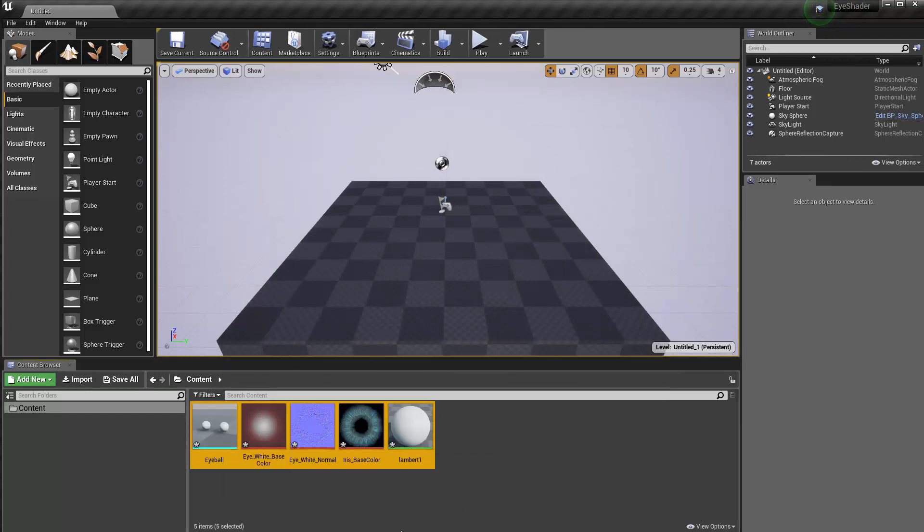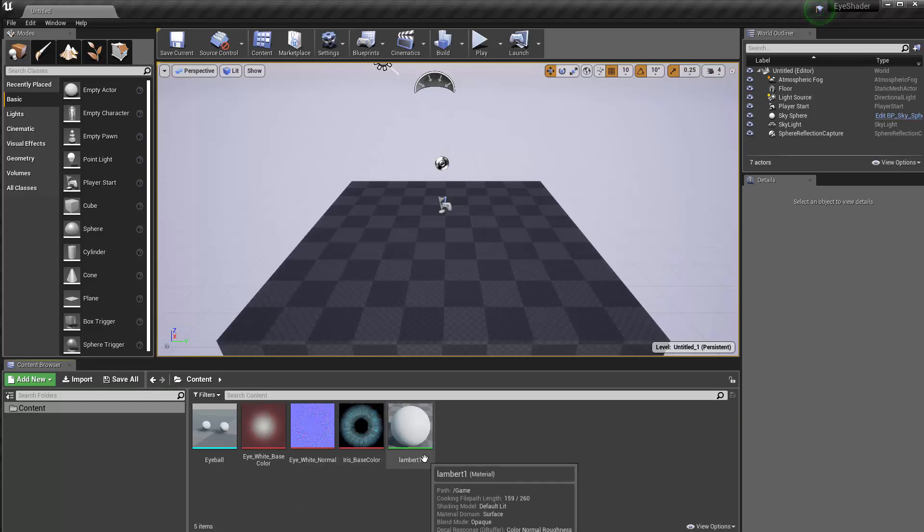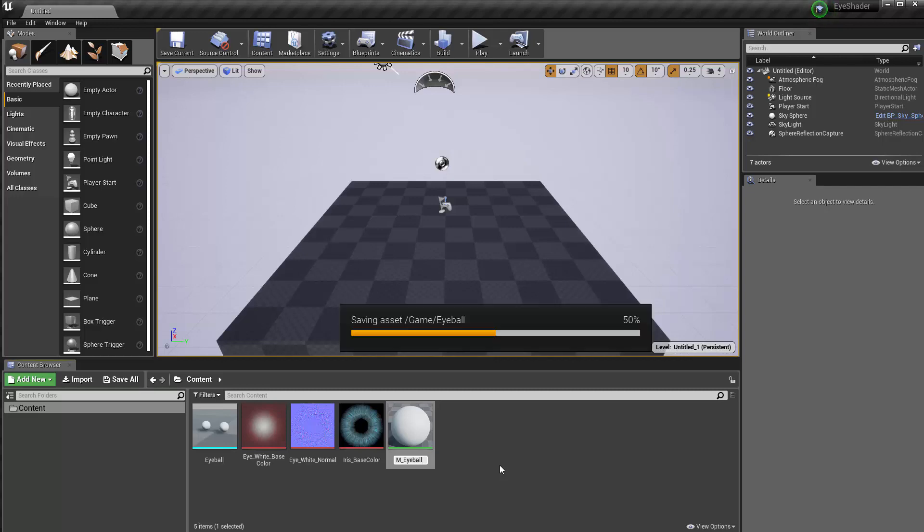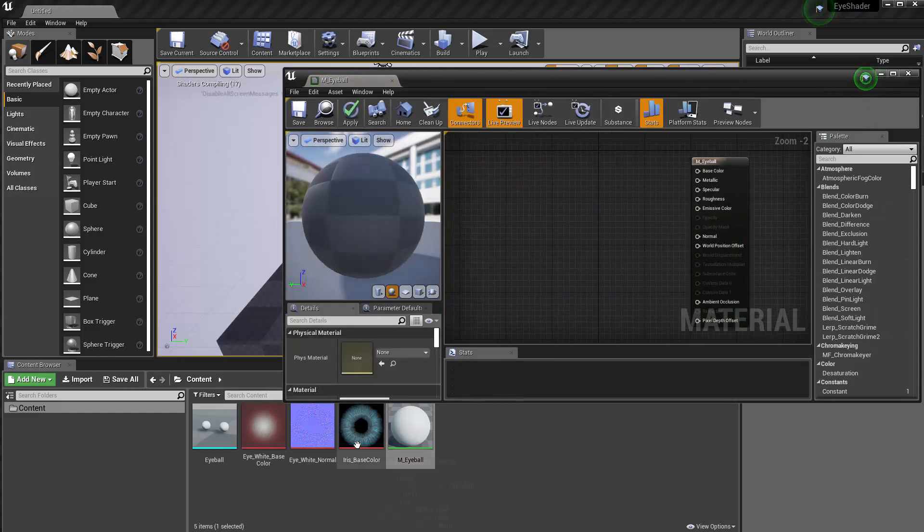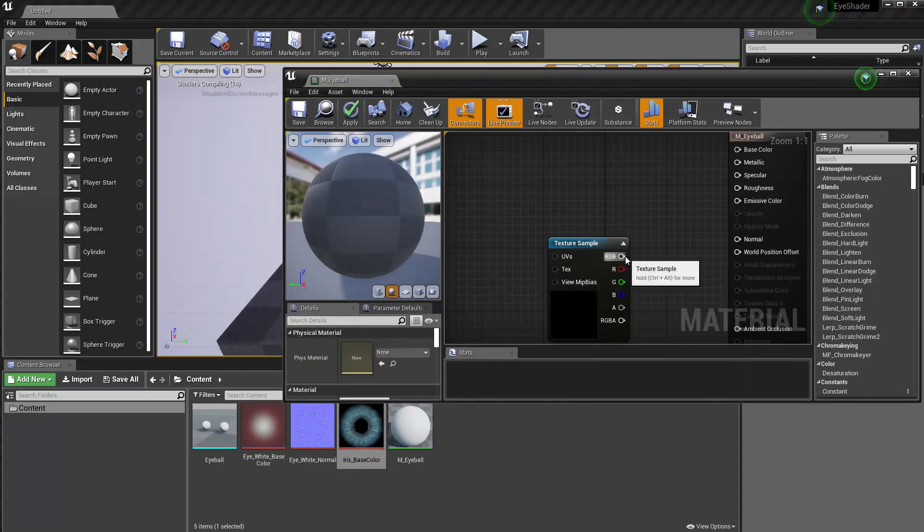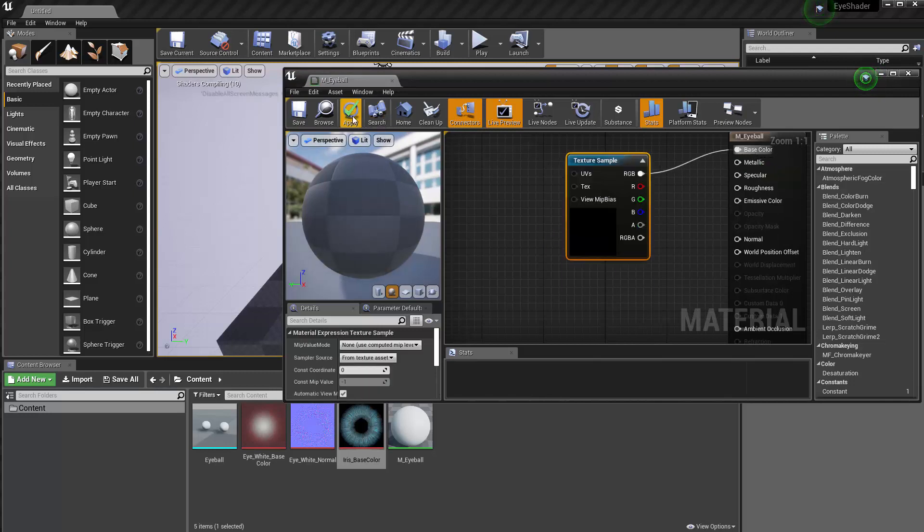Grab all those and Control+S to save them. Alright, now the material for the eyeball is Lambert. I'm going to rename this to M_eye. Double-click to open it and then connect, for now, the iris base color into the base color input. Let's apply that and take a look.